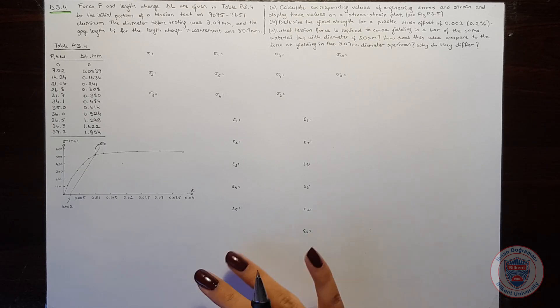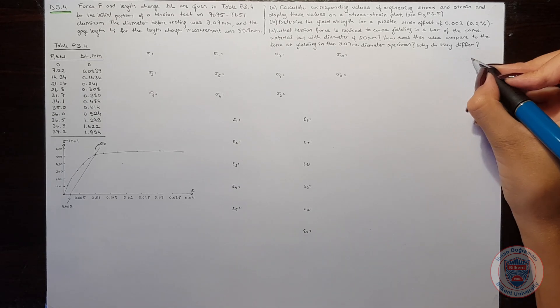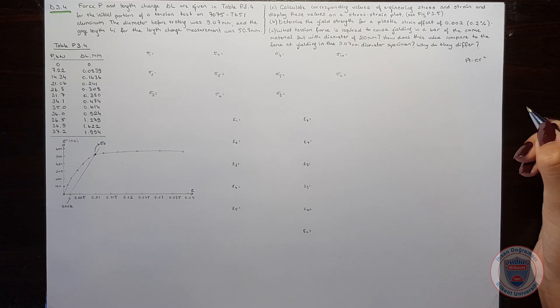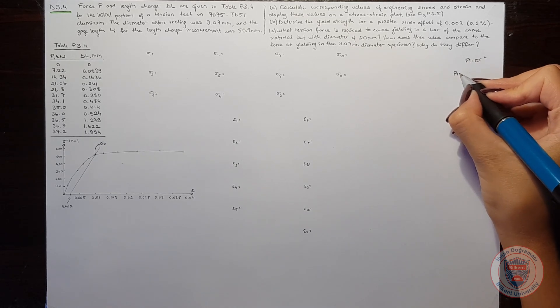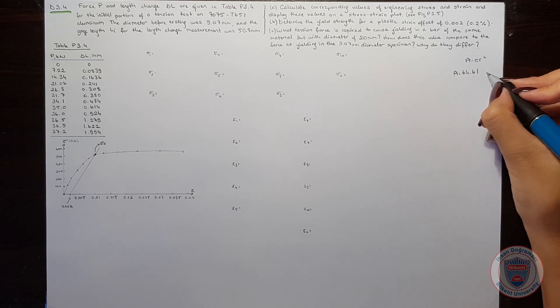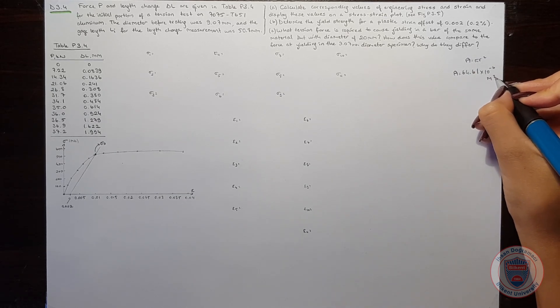We can start now. We know that sigma is equal to force over area. Since area is equal to pi times r squared, in our case, the area will be equal to 64.61 times 10 to the power of minus 6 meters squared.